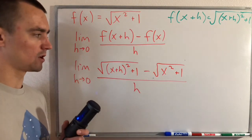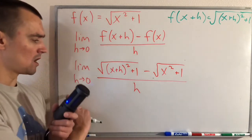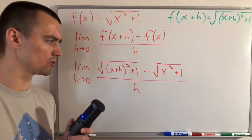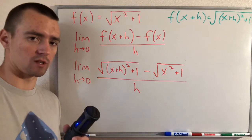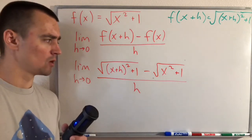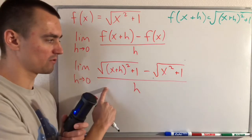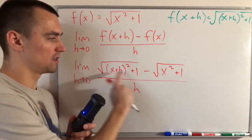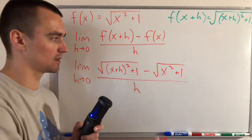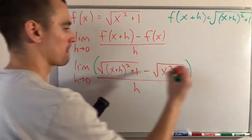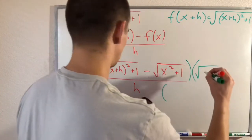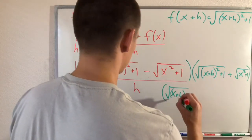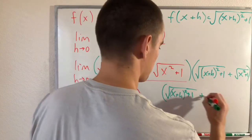Now the trick we want to use to find this limit — we can't just plug in h = 0 because we'd be dividing by zero. So we use the same trick from 'The Calculus Lifesaver': multiply both the top and the bottom of this fraction by the conjugate of the numerator, which is the same expression but with a positive sign instead of a negative sign.